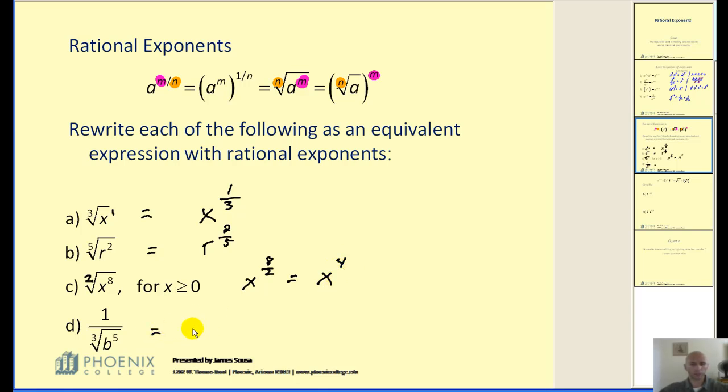One last example. This would be b to the, again, the index is three. That's the denominator of my fractional exponent. So this would be to the five-thirds power. If I really wanted to, I could rewrite this by moving this up into the numerator. And that would be b to the negative five-thirds power.